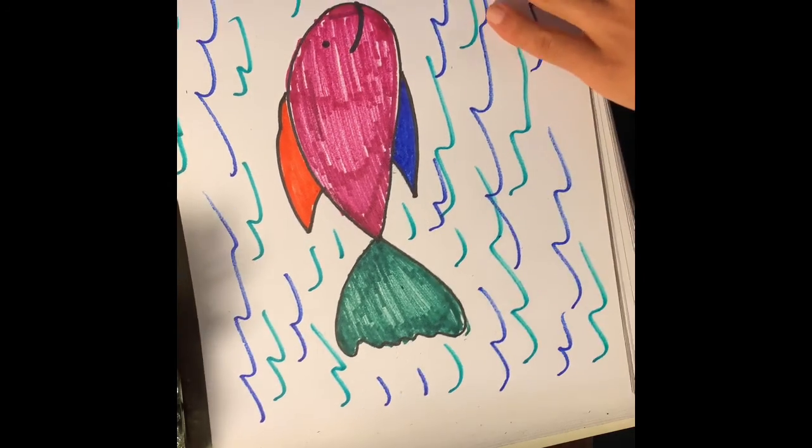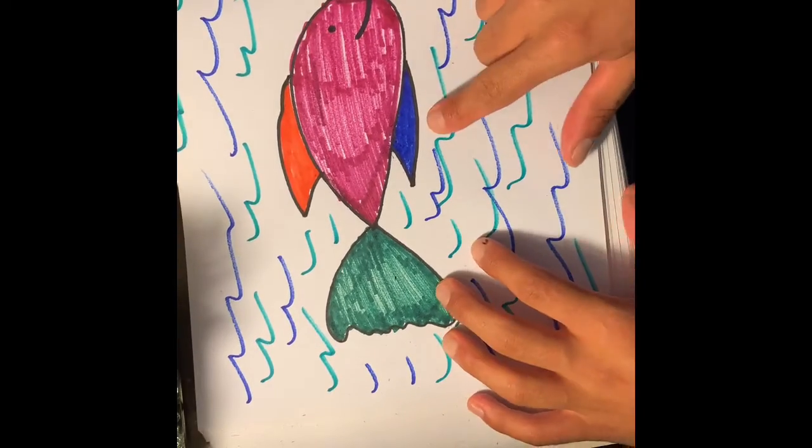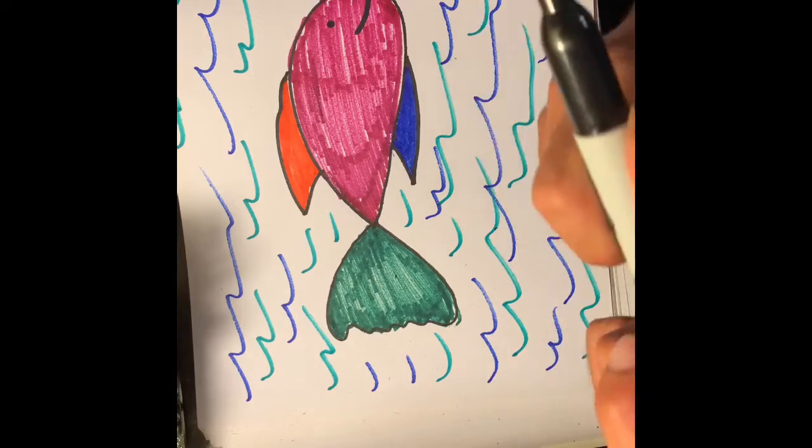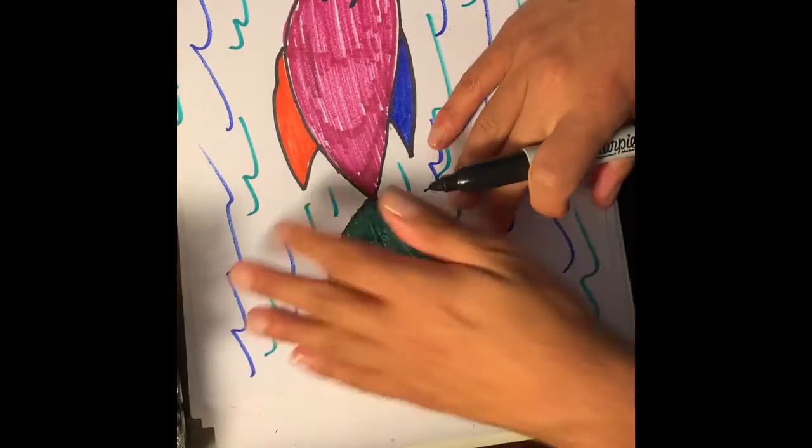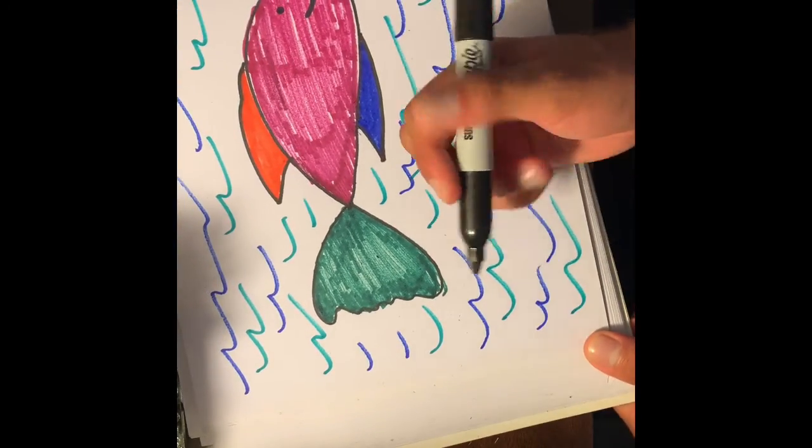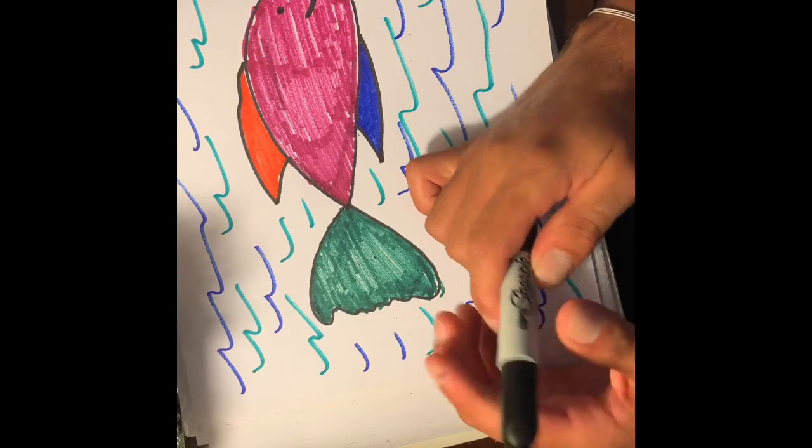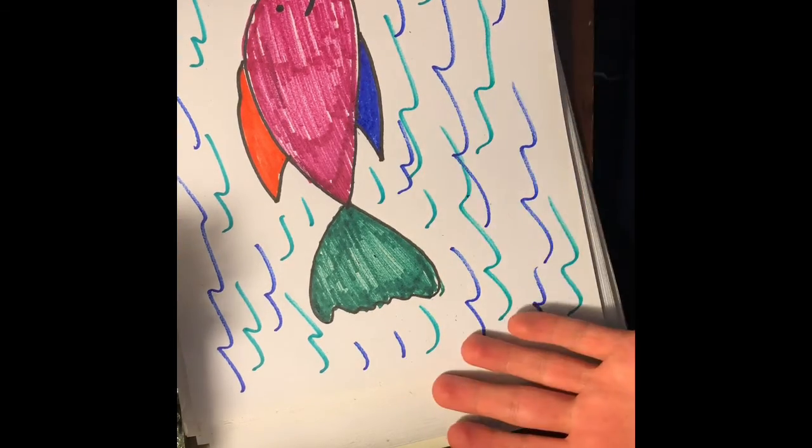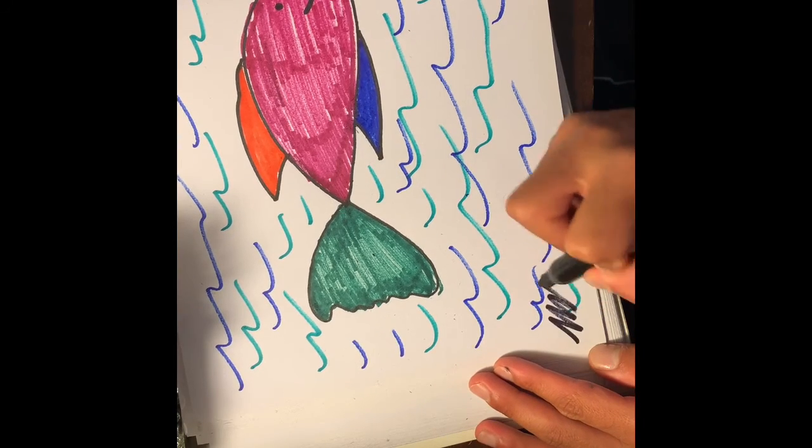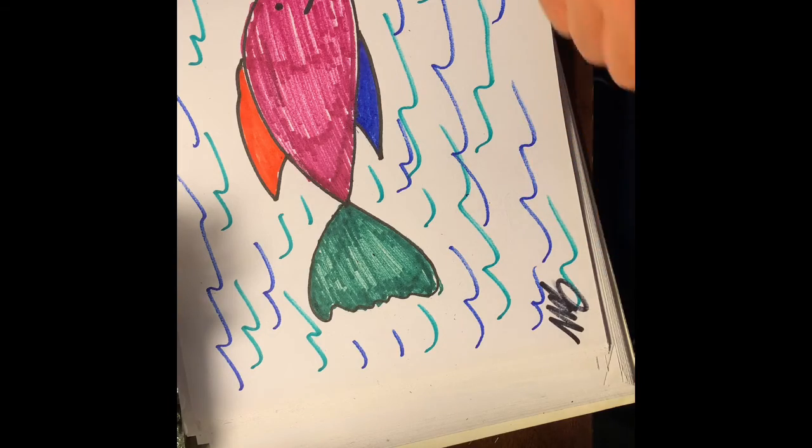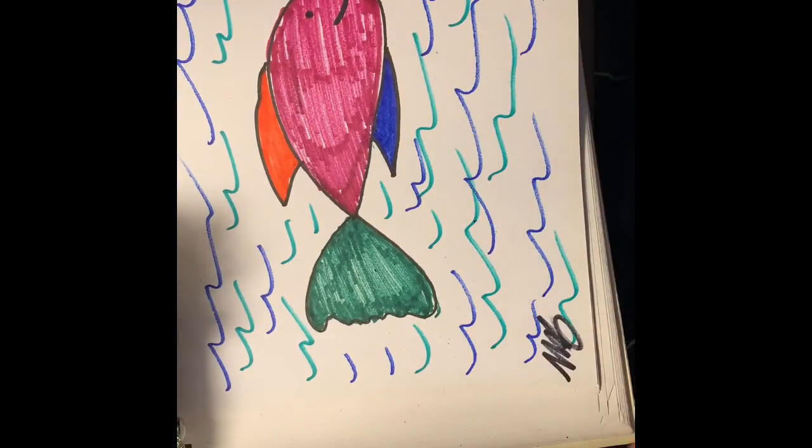All right now the last thing we need to do is every artist has to sign their work. So you have to put your name on the corner of the paper so when your parents, when you guys get older, your parents are looking back on your artwork they know that you made it. So I just put my initials right there. You guys can write your name, anything you want, a little symbol to let everyone know that is your work.